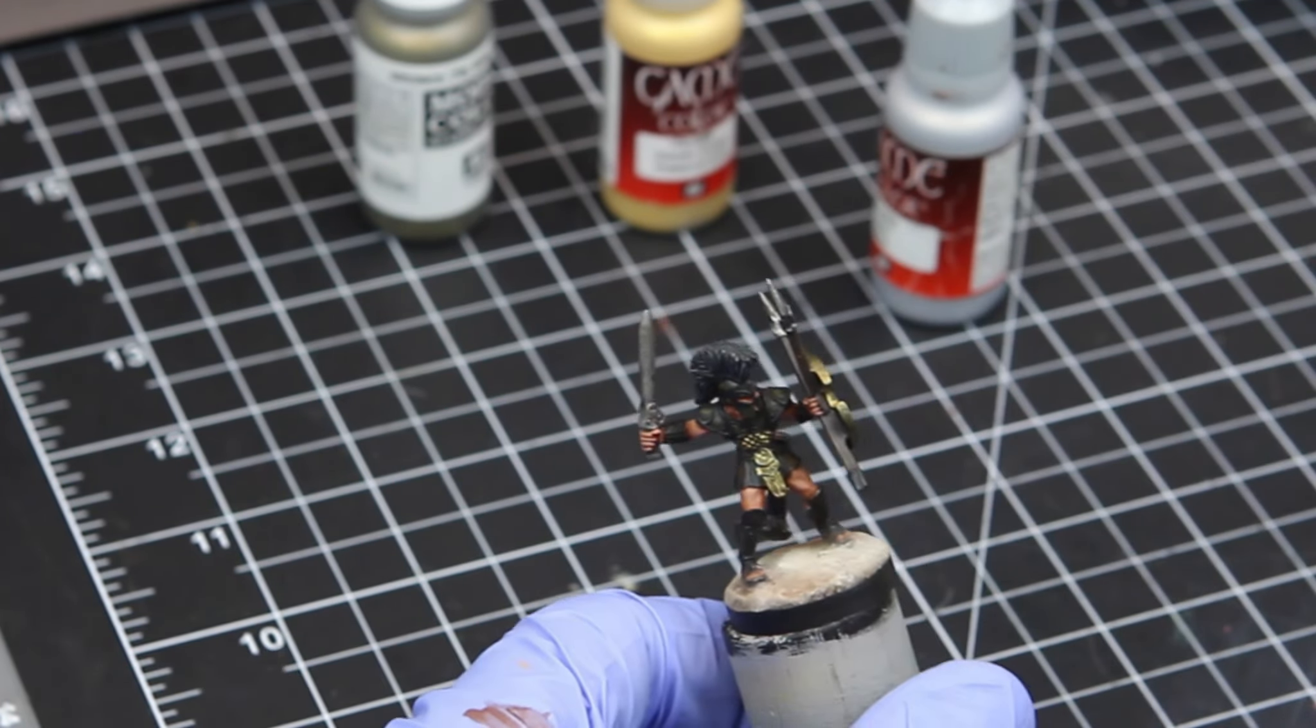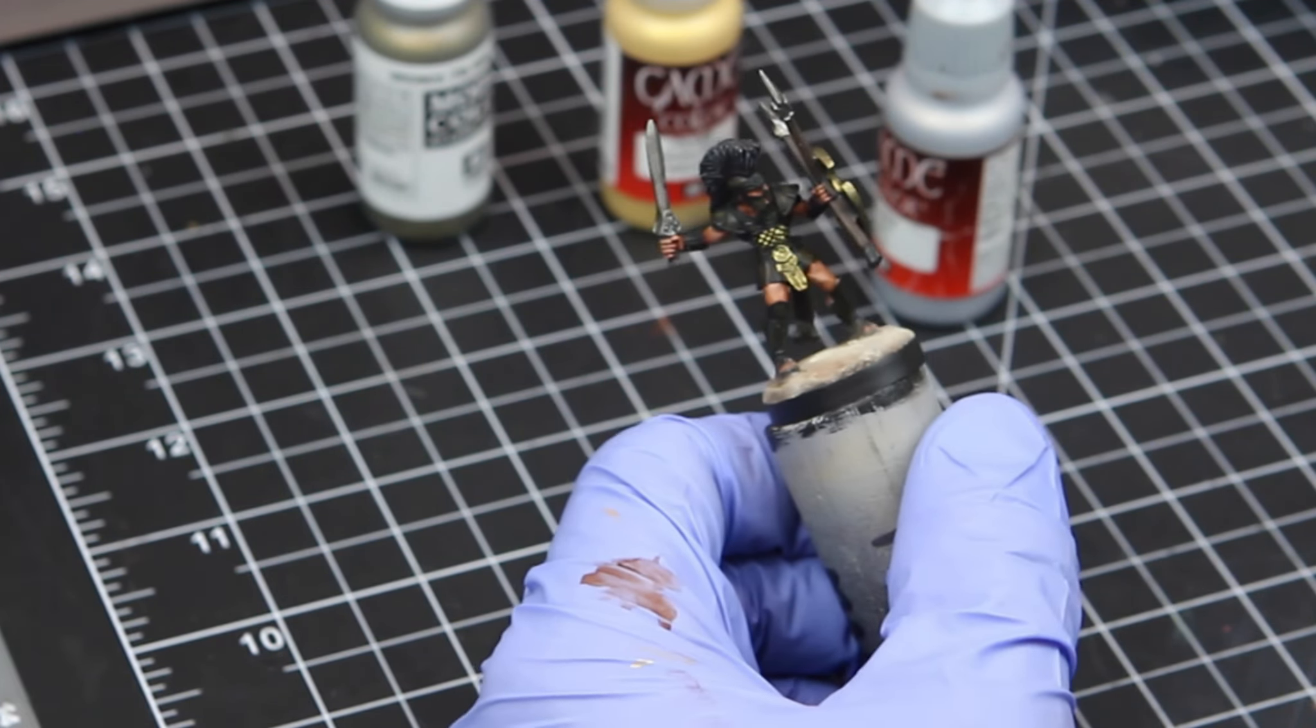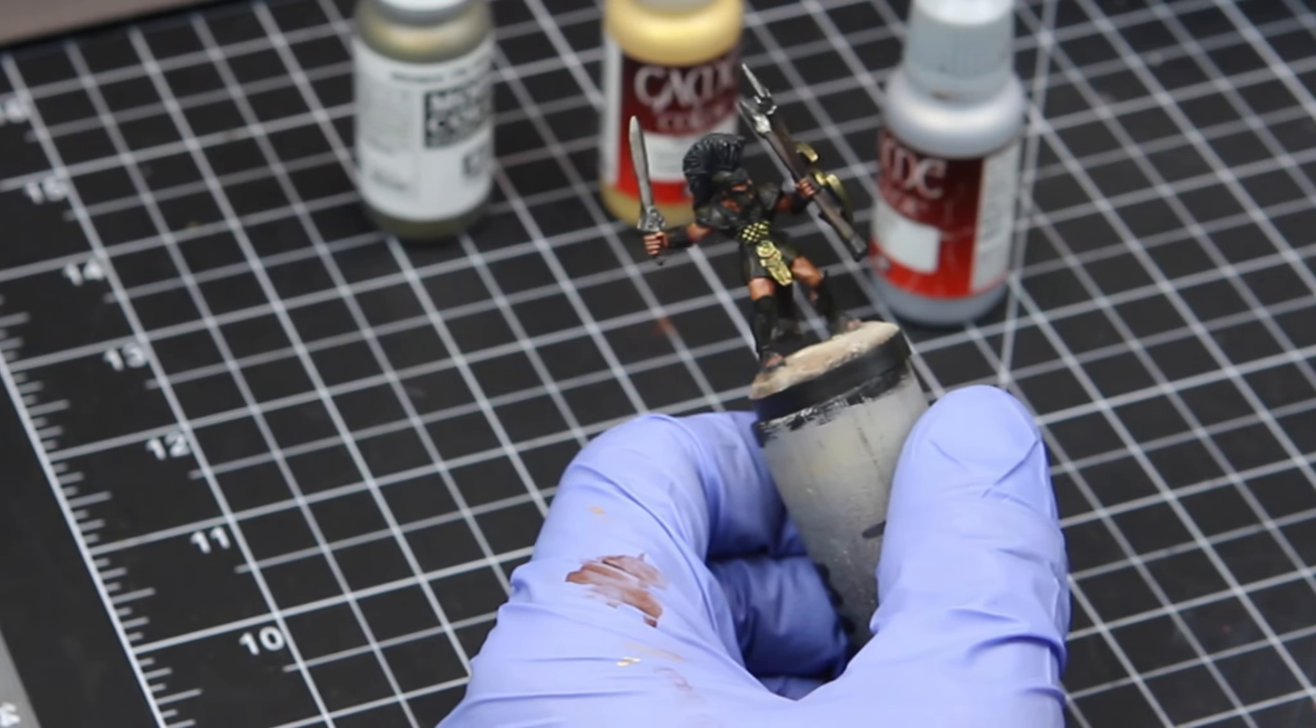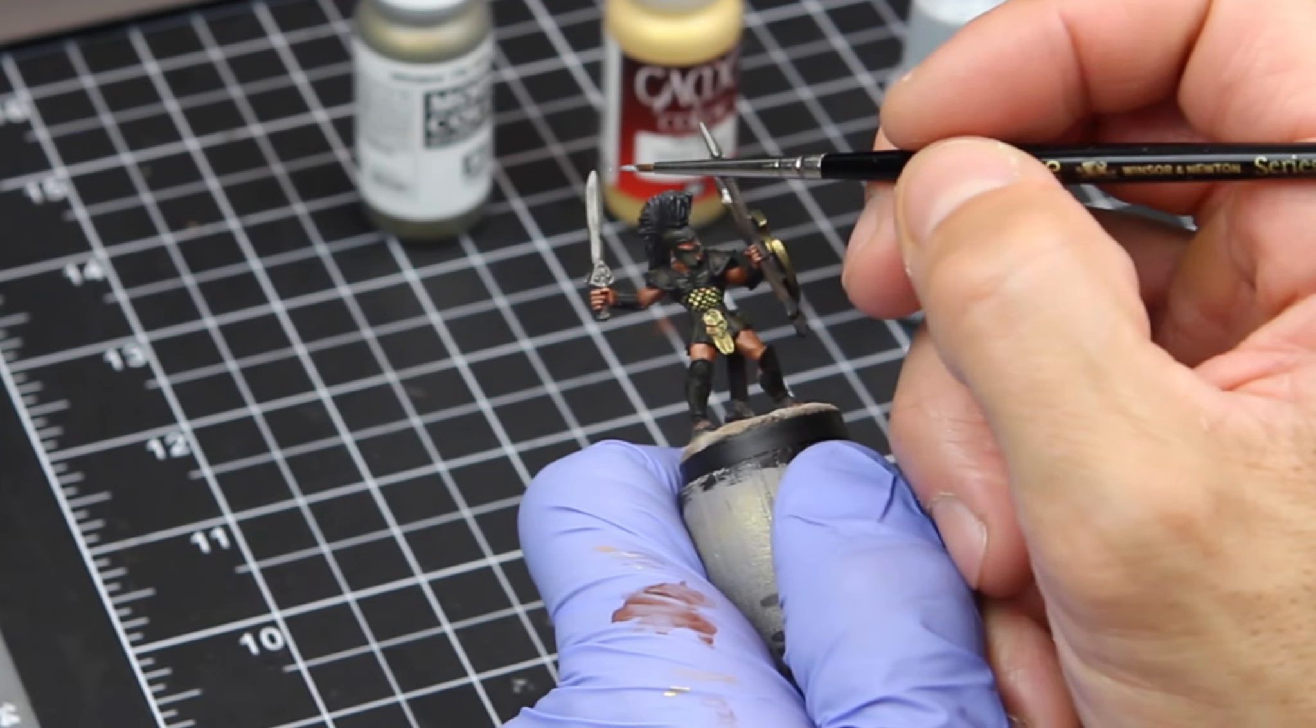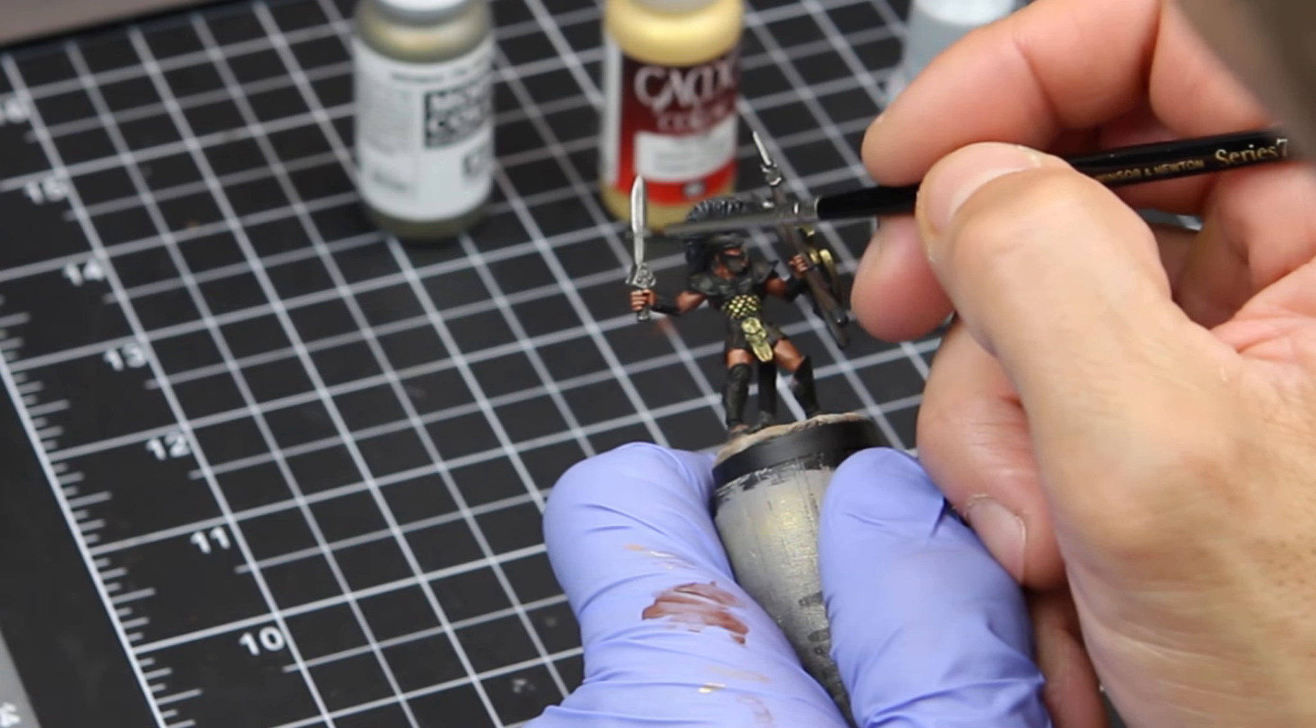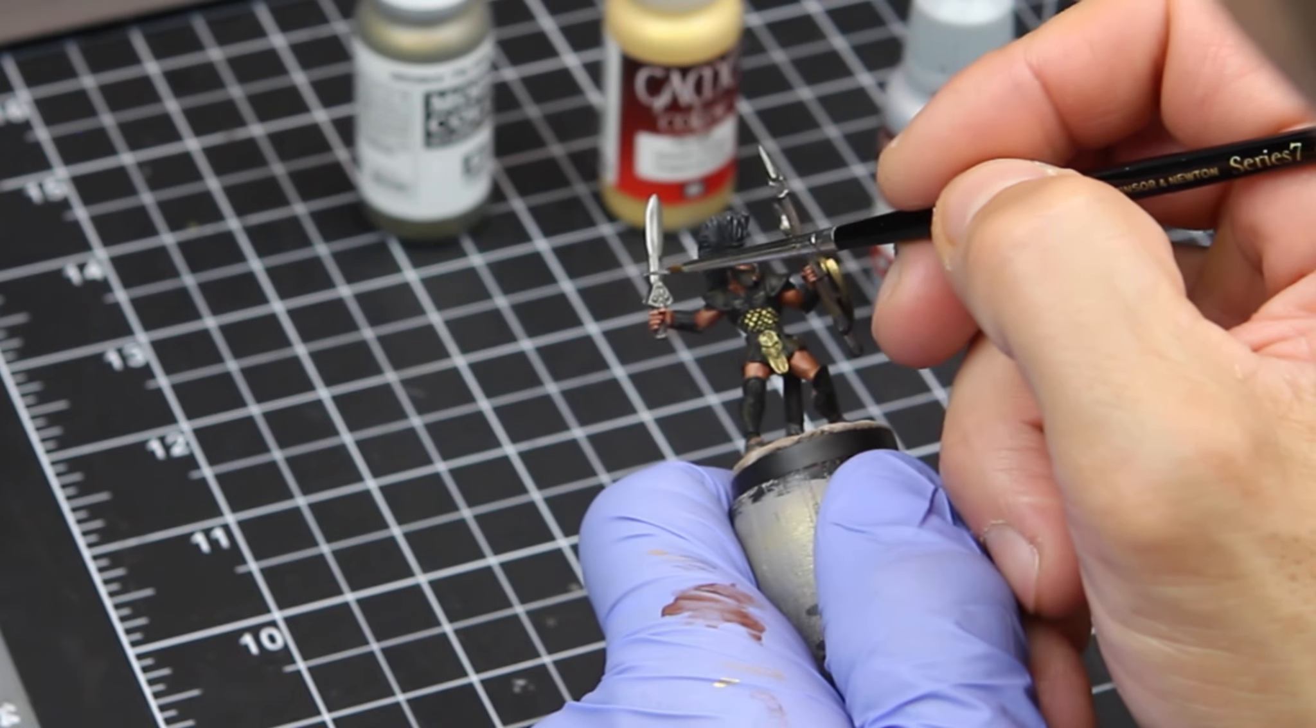All right, on this guy, I'm going to talk a little bit about highlighting metallic objects. I'm not doing any non-metallic metal here. I'm just going to use some metallic paints. You know, non-metallic metals could be a whole video all by itself. But basically, I like to use a darker metallic color. In this case, it's a lead belcher for the steel.